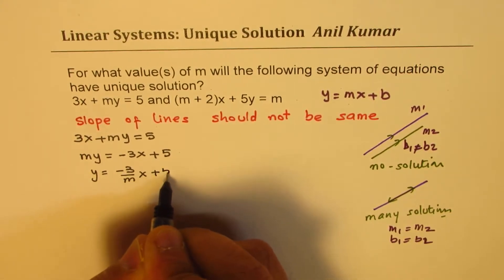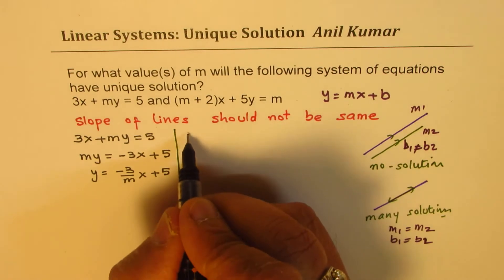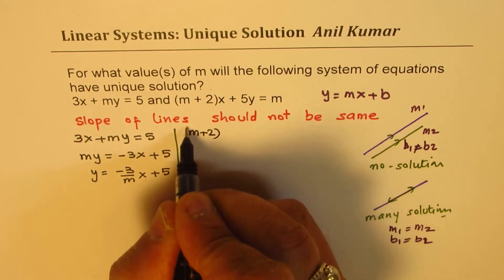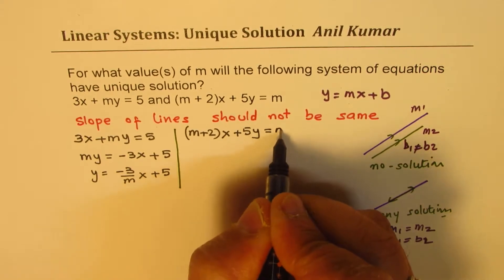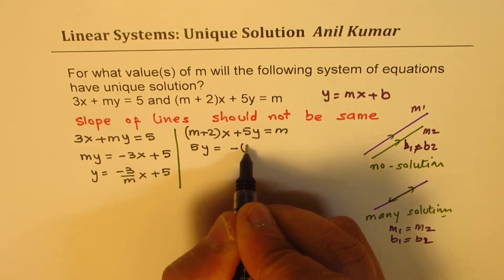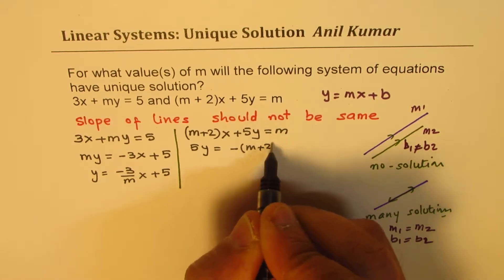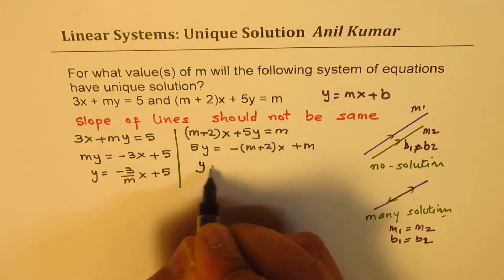Now for the second equation, let us do it here. We have m plus 2 times x plus 5y equals m. That means 5y equals minus of m plus 2 times x plus m.